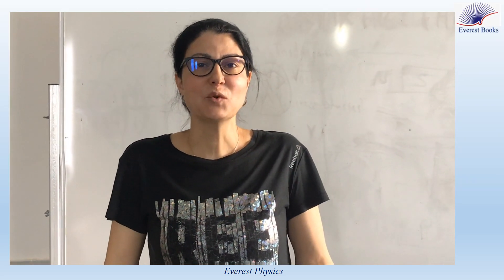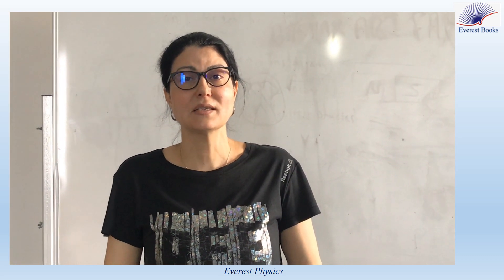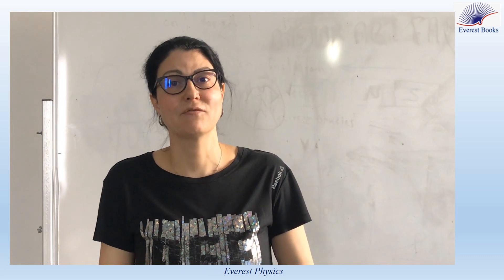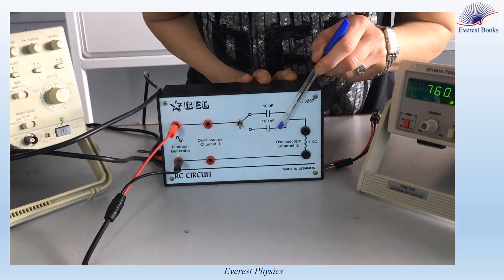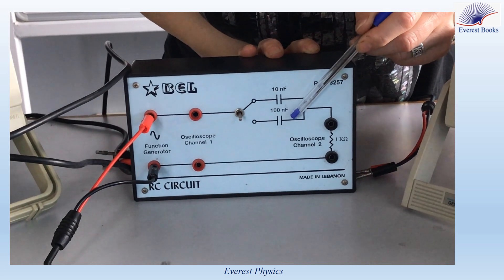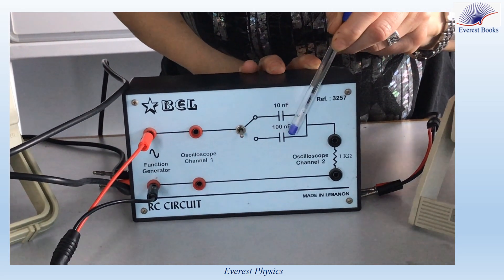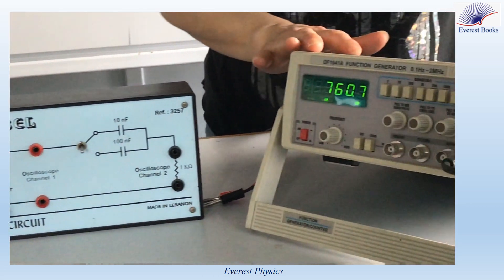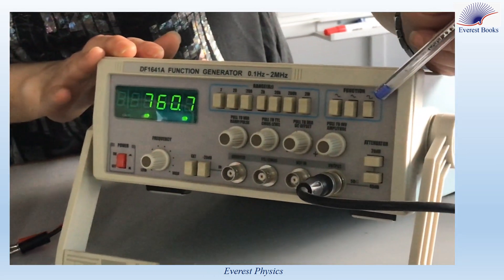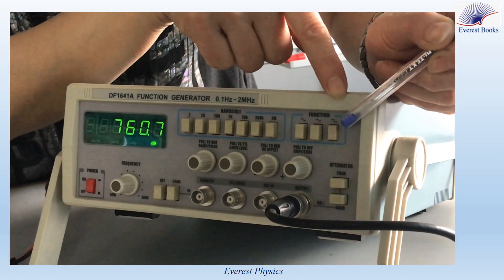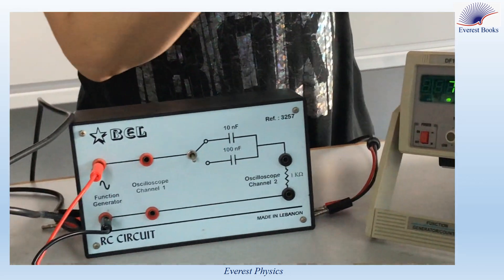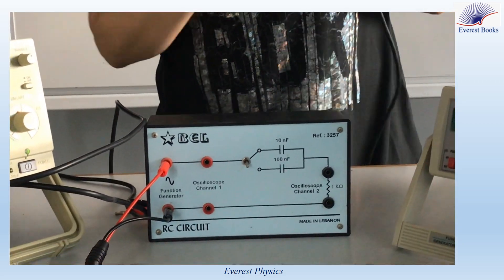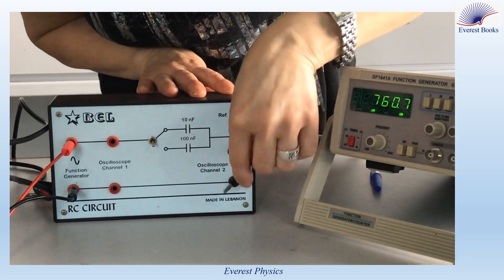In this experiment we want to study the variation of the current in a series RC circuit fed by a square wave voltage. We have a resistor of resistance 1 kilohm connected in series with a capacitor of capacitance 100 nanofarads. The resistor and capacitor are connected in series with a function generator, which is adjusted to provide a square wave voltage. We want to display the voltage across the function generator and across the resistor on the oscilloscope screen, so I will connect channel one across the resistor.